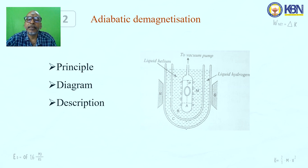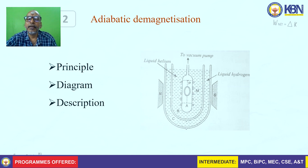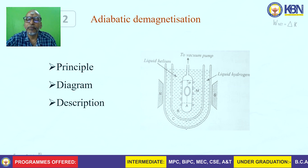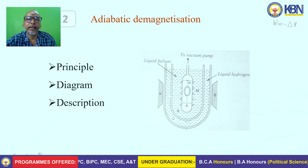The cylindrical vessel is placed inside Dewar flask B, which contains liquid helium at a temperature of 1 K. Dewar flask B is surrounded by another Dewar flask C, which contains liquid hydrogen. There is also a powerful electromagnet shown by north and south poles. The cylindrical vessel is connected to the vacuum pump — these are the main parts in adiabatic demagnetization.